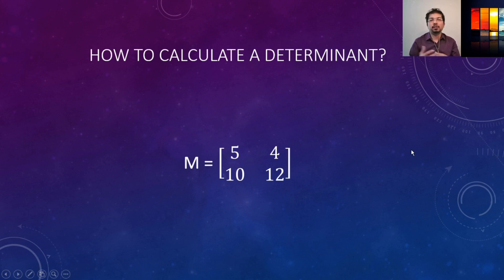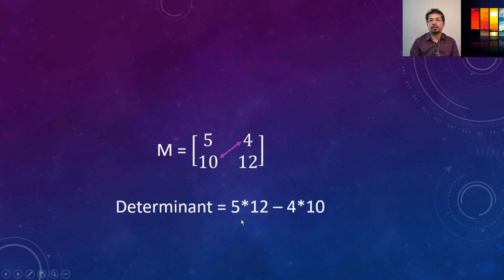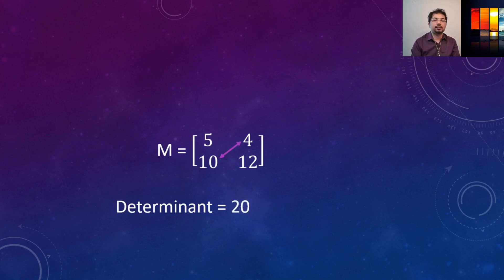Now if we want to take the determinant of this matrix, what we need to do first is multiply the two diagonal elements, 5 and 12, and then subtract the product of 4 and 10. So 5 times 12 is 60, and 4 times 10 is 40. So the determinant of this 2x2 matrix is 20.